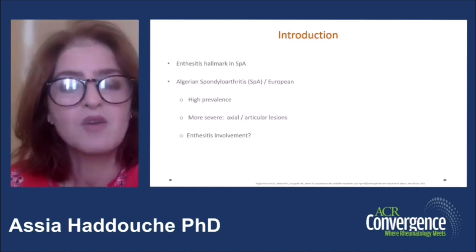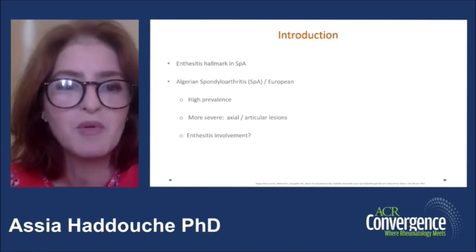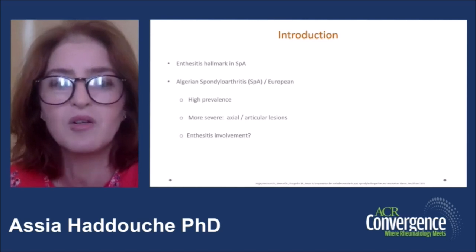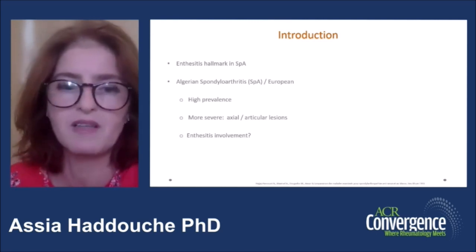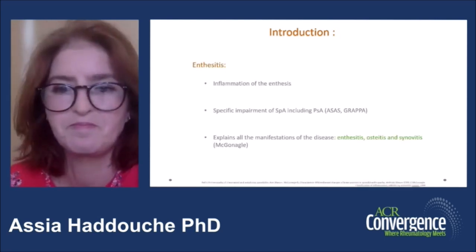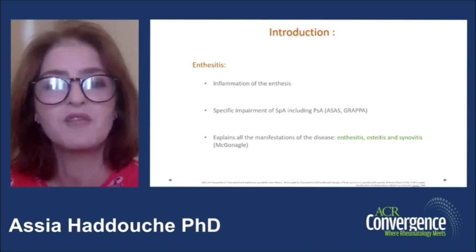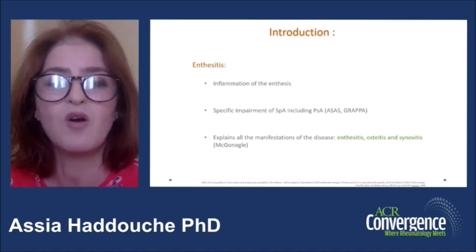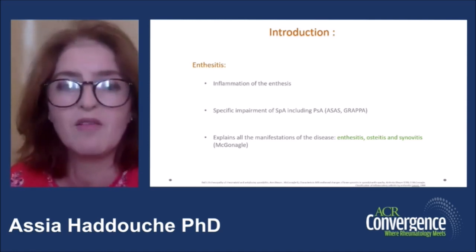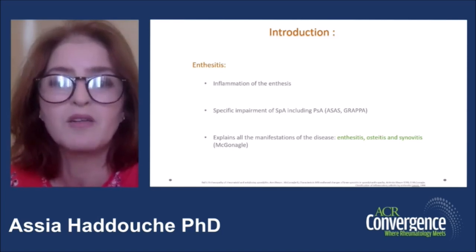Enthesitis is the hallmark in spondyloarthritis. Maghrebin SpA, and especially Algerians, differs from European by its high prevalence, its severity at the axial and articular level, especially for coxitis. But what about enthesitic involvement? Enthesitis is the inflammation of the enthesis — the specific impairment of spondyloarthritis. It explains all manifestations of the disease, namely enthesitis, osteitis, and synovitis, according to McGonagle's work.